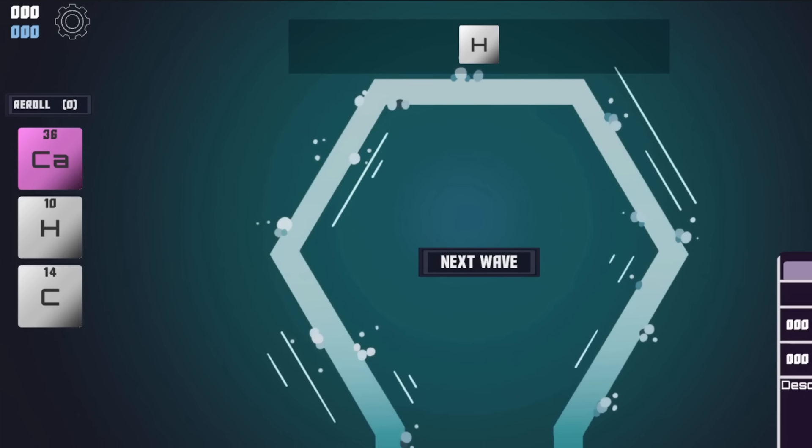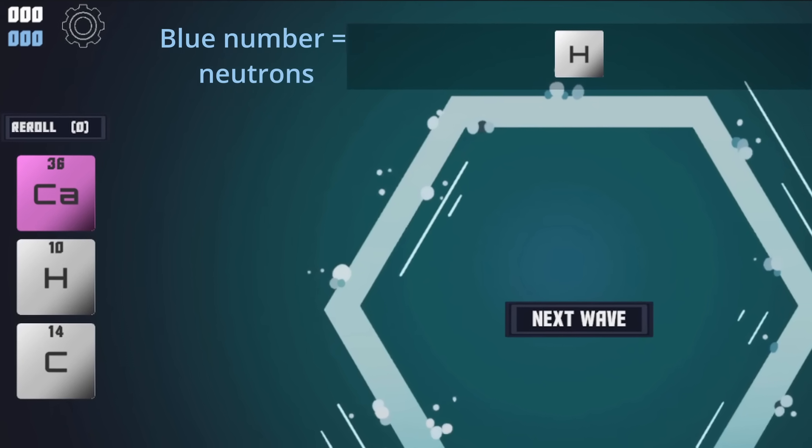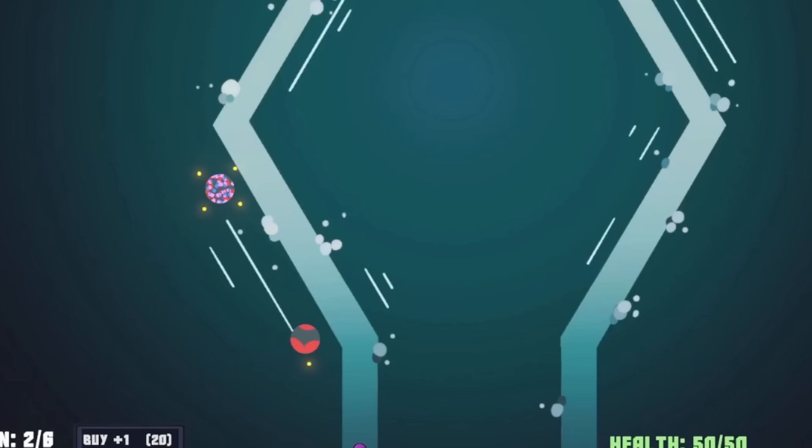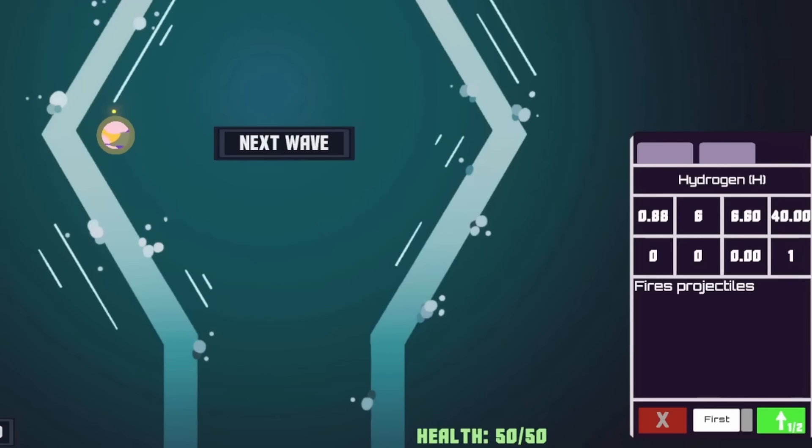To tie this all together, I added a new neutron currency, and you gain one neutron after every completed wave, so you have to be selective with which atoms you upgrade. Furthermore, atoms can only be upgraded when they're not part of a compound, but when upgraded atoms are added to a compound, the entire compound is upgraded as well.